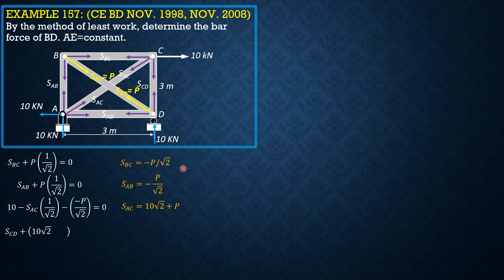For SCD, summation of forces in Y equals zero — downward positive — plus SAC which is (10 square root of 2 plus P) times its vertical component 1 over square root of 2 equals zero. So SCD equals negative 10 minus P over square root of 2.